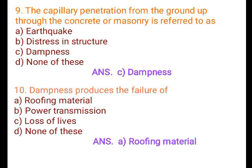Question 10: Dampness produces the failure of: A. Roofing material, B. Power transmission, C. Loss of leaves, D. None of these. Answer: A. Roofing material.